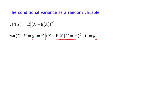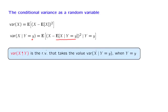We proceed in the same way as we proceeded for the case where we defined the conditional expectation as a random variable. Namely, we think of this quantity as a function of little y, and that function can now be used to define a random variable. That random variable, which we denote this way, is the random variable which takes this specific value when capital Y happens to be equal to little y. Once we know the value of capital Y, this quantity takes a specific value. But before we know the value of capital Y, this quantity is not known — it's random, it's a random variable.